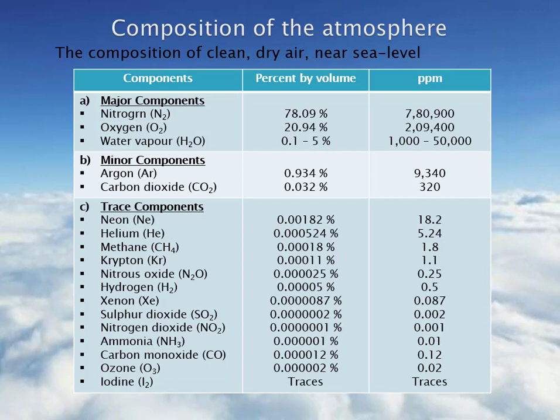Major components include nitrogen, oxygen, water vapor. The minor components include argon and carbon dioxide. Trace components include neon, helium, methane, krypton, nitrous oxide, hydrogen, xenon, sulfur dioxide, nitrogen dioxide, ammonia, carbon monoxide, ozone and iodine. You can see in this table there are two different columns which are showing the percentage of these components by volume and its concentration in parts per million.